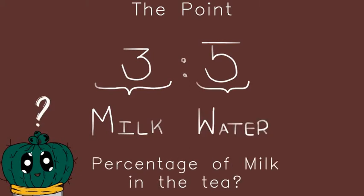You can say that there are three liters of milk for every five liters of water in your tea. So let's say you want to find out the percentage. Ratios are good, but I want to find out the percentage. It makes a whole lot more sense.